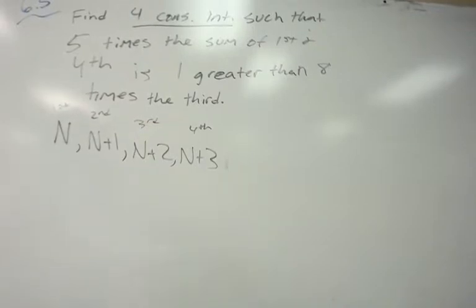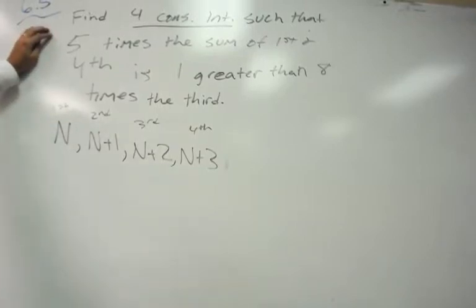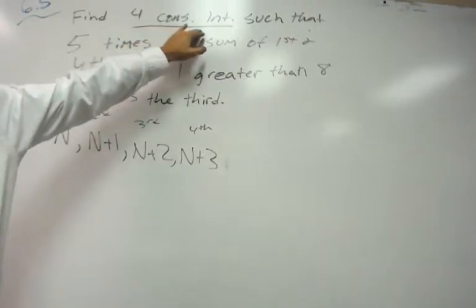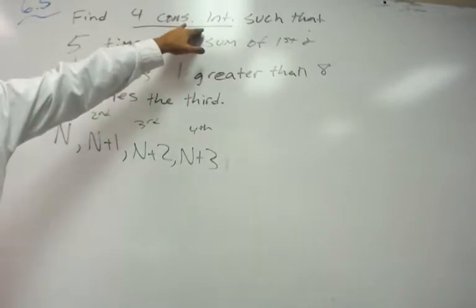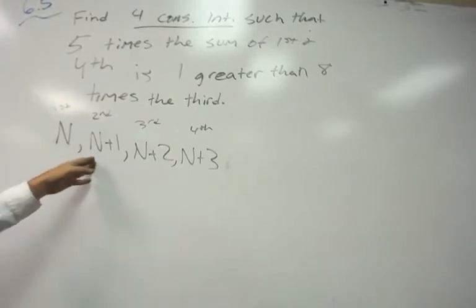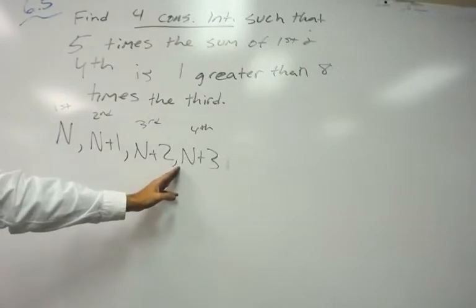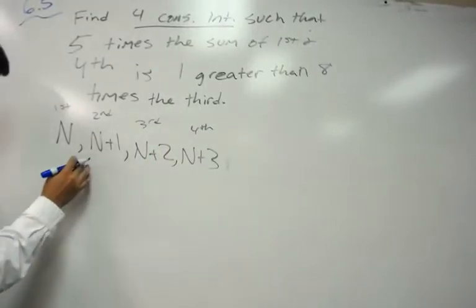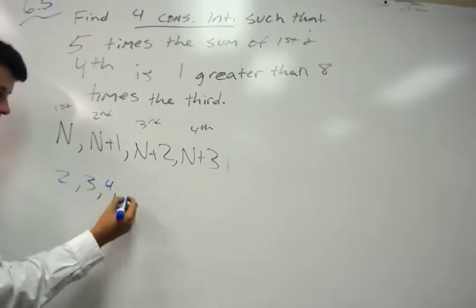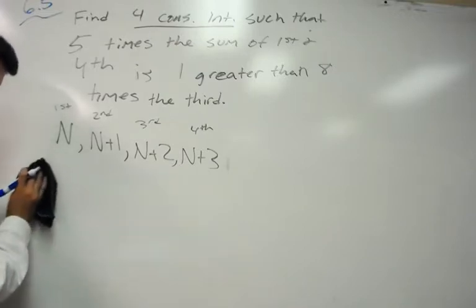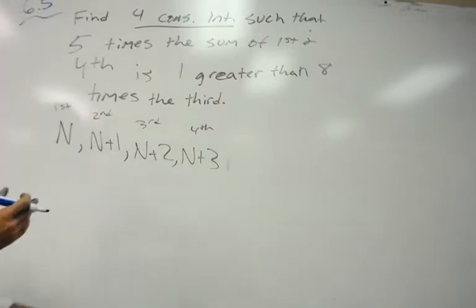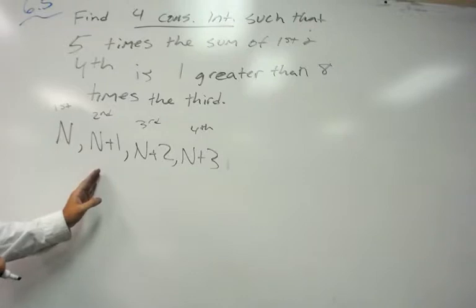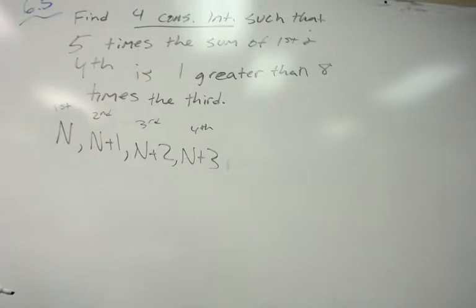Example 6.5 says: find four consecutive integers such that five times the sum of the first and fourth is one greater than eight times the third. The key thing to know is how to write four consecutive integers: n, n+1, n+2, n+3. For example, if n equals 2, you'd have 2, 3, 4, 5. We label these first, second, third, fourth in order.